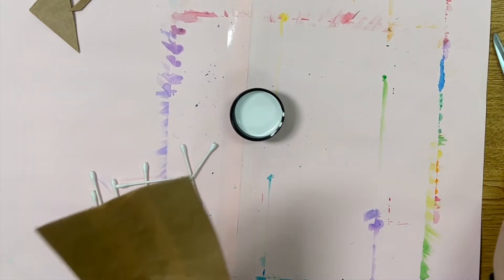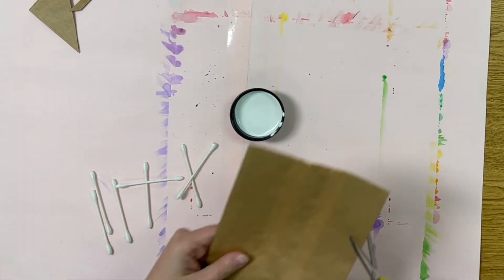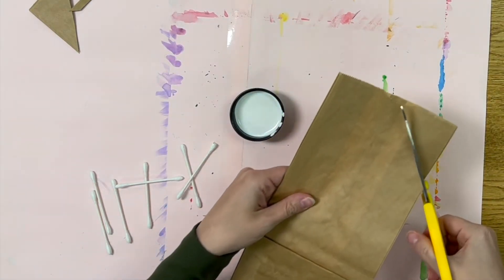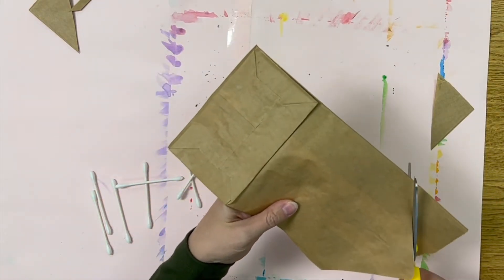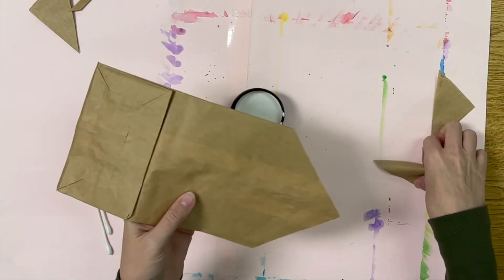The first part of this project is going to be to cut the bag so that it looks like it has a roof. We will cut a slanted line on each corner to form a triangle top. It doesn't have to be perfect.